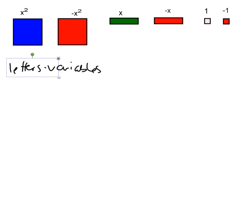Likewise, these rectangles, they are the x tiles. Again, you have two different colors because you have a negative and a positive. Usually the way that you do it is the red is always negative, and then the other color is always positive.